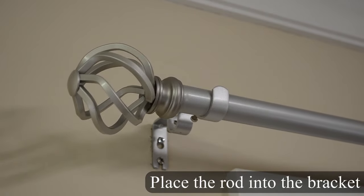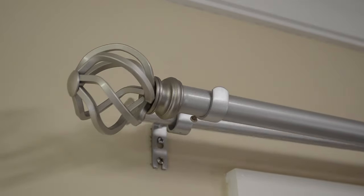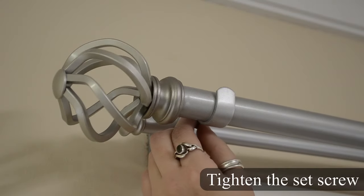Once you have the decorative ends attached, you will then simply place the rod into the bracket pockets. Adjust the rod to be in the correct position and tighten the set screw to prevent the rod from moving and for safety.